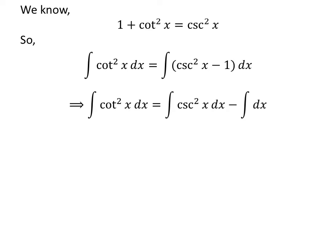Now, let us apply the linearity property of integral. We get integral of square of cotangent of x is equal to integral of square of cosecant of x minus integral of 1 with respect to x.